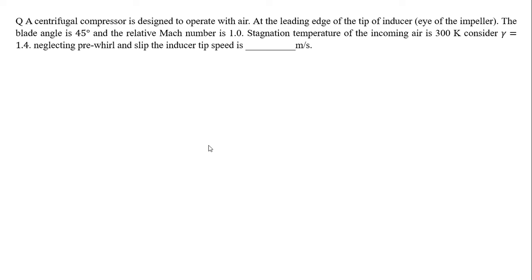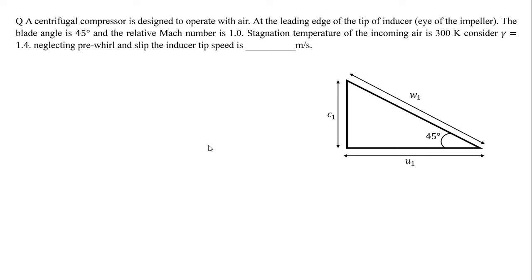Without pre-swirl, the velocity triangle looks like this — as we have already seen in the lecture for both with and without pre-swirl cases. The blade angle is 45 degrees and relative Mach number M = w1/a = w1/√(γRT1) = 1, so w1 = √(γRT1). Squaring both sides: w1² = γRT1.